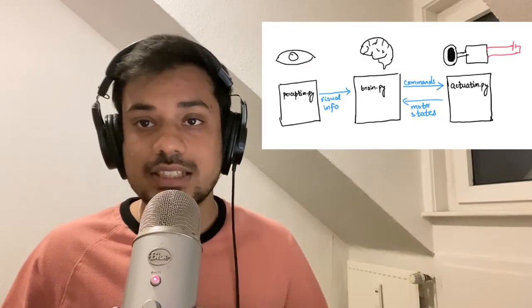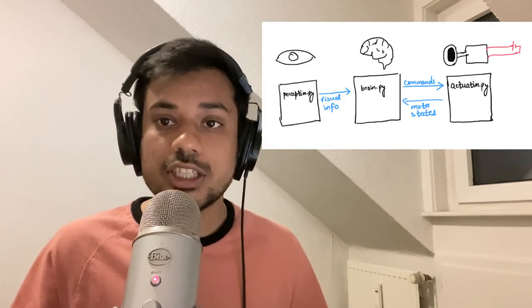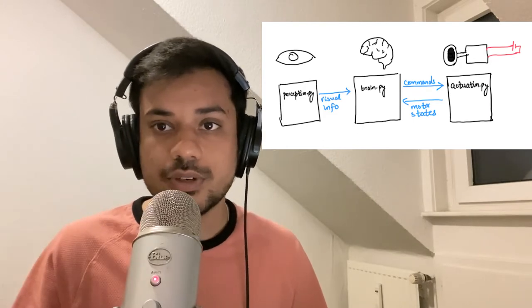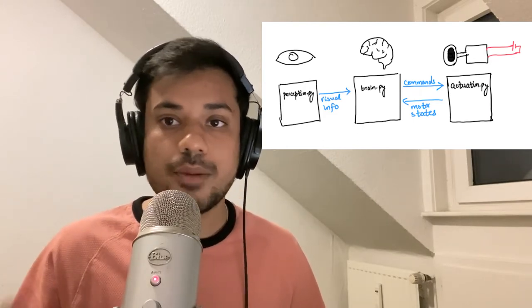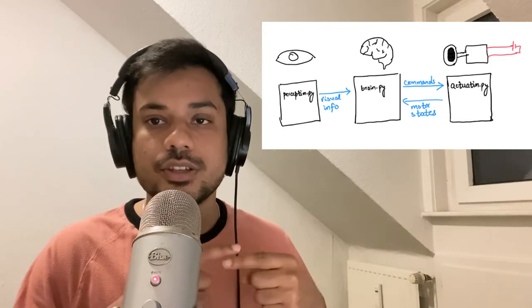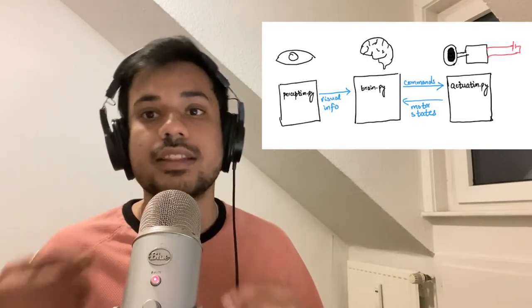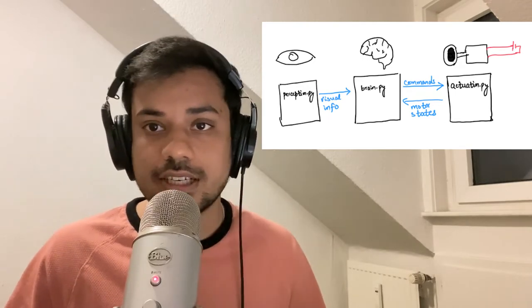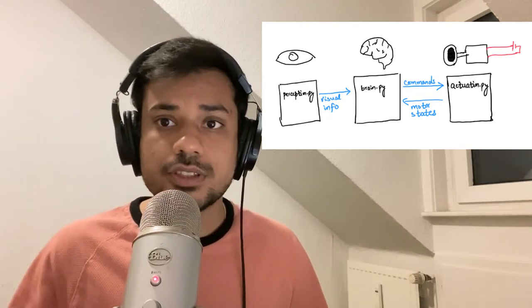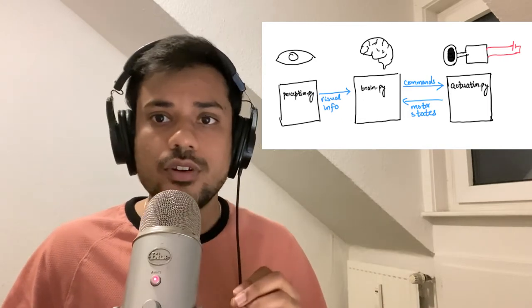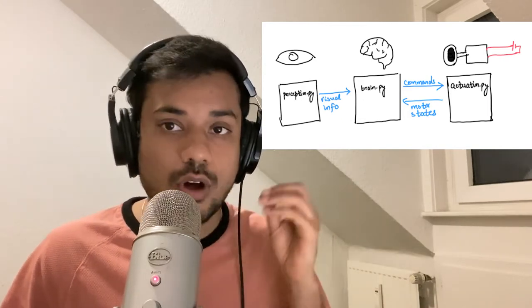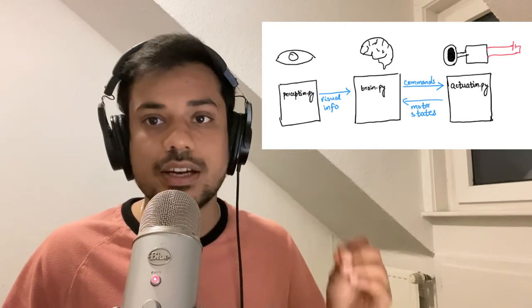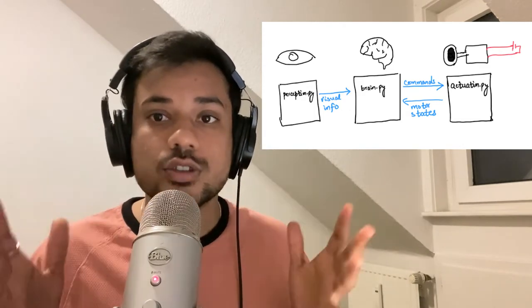In the last video, we were talking about a naive example which was a trash-picking robot and the software design for it. The trash-picking robot is responsible for looking at trash in its surroundings, and if it finds something it'll pick up trash, put it in the bin, and then this process continues. You don't really need to go to the previous video because our topic right now is about understanding different communication methodologies and not really ROS software design per se.